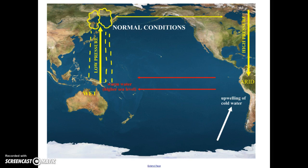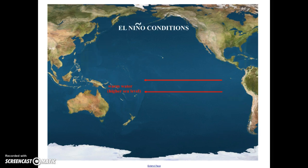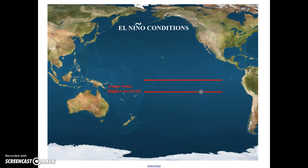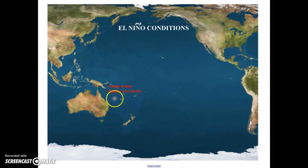So let's take a look at El Nino. During El Nino, what happens is those trade winds that were blowing weaken, and when they weaken, they basically disappear. So this warm water that's half of a meter higher is going to start to travel back towards the east coast of South America.